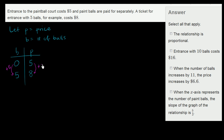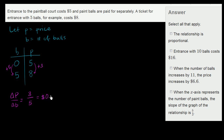So our change in price over the change in the number of balls is equal to $3 when the change in balls is 5. You could view this as your unit price per ball — your unit rate of change of price per ball. This is going to be $0.60 per ball.